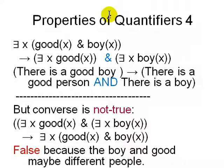What are the properties of quantifiers we have? There exists x, there is a good boy, implies there is a good person and there is a boy. But the converse is not true. There is somebody who is good and there is a boy doesn't mean the same x is good and the same x is a boy, because they may be different people.